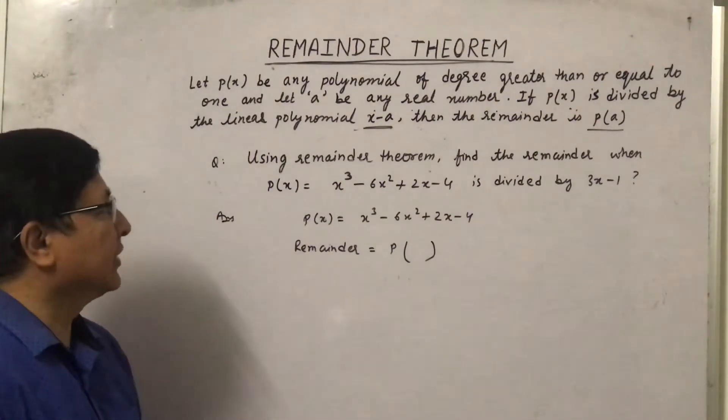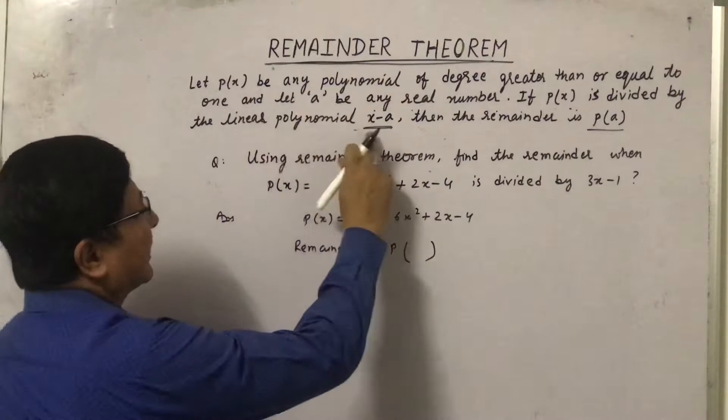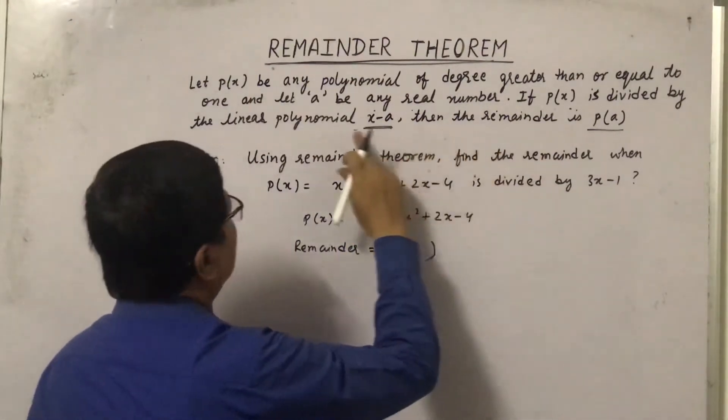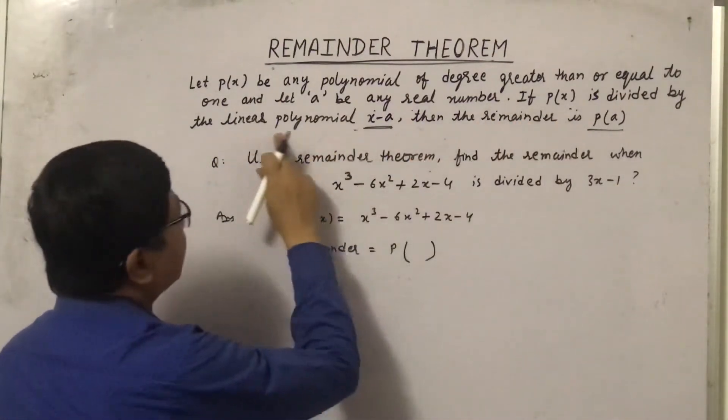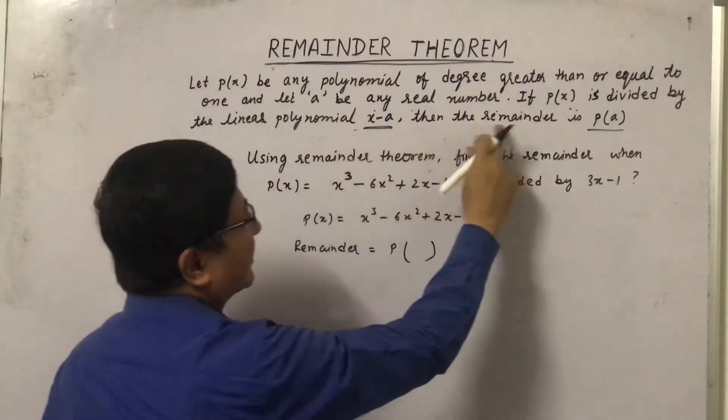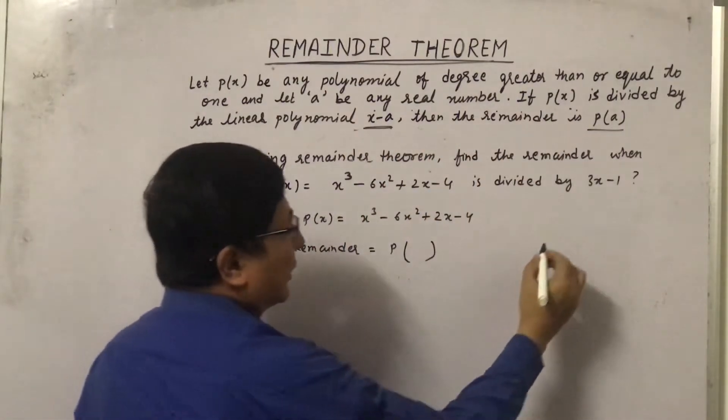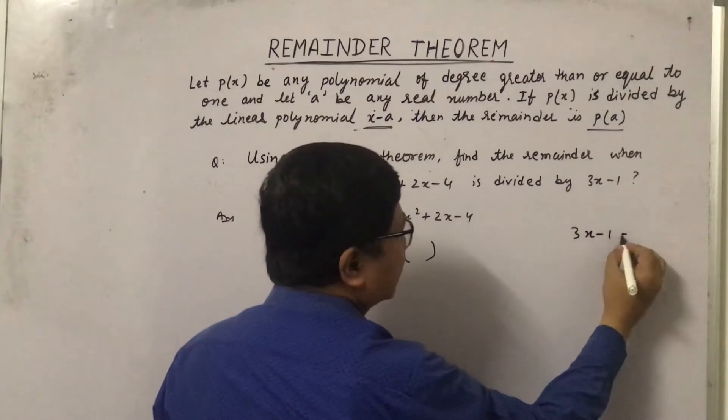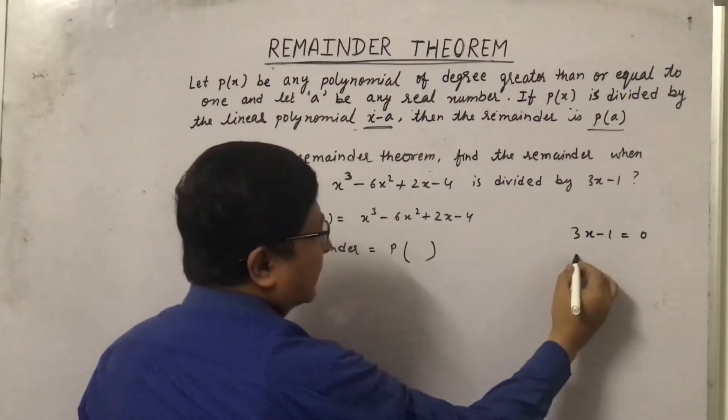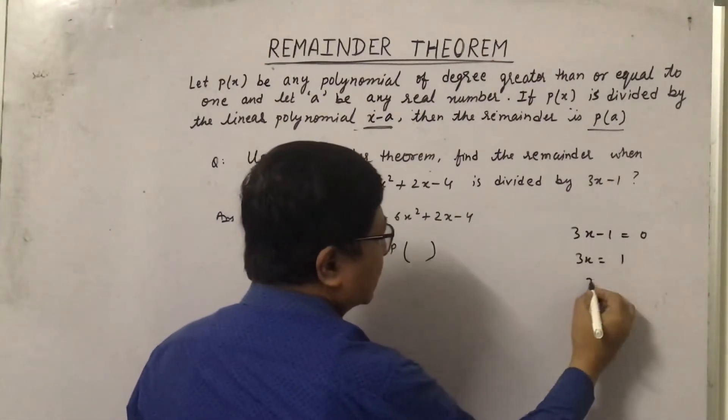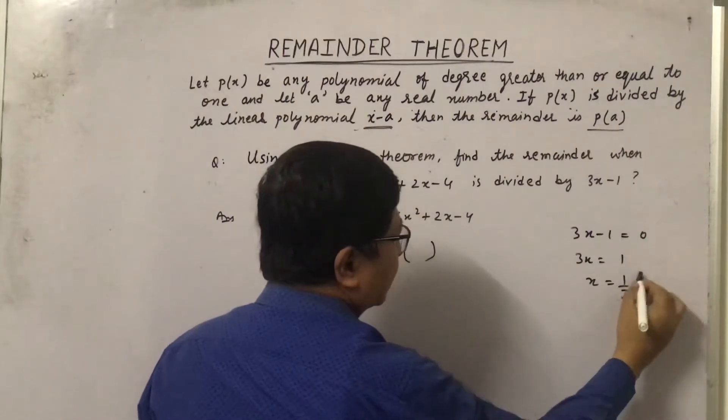If p(x) is divided by the linear polynomial x - a, then the remainder is p(a). Now here, if we take 3x - 1, that is equal to 0, then 3x will be equal to 1, so x is equal to 1/3.